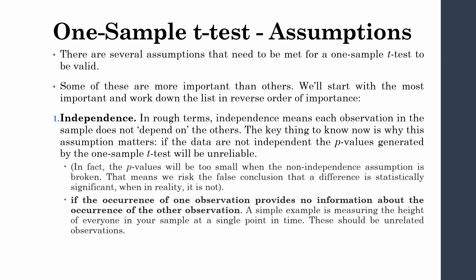If the occurrence of one observation provides no information about the occurrence of another observation, then we have independence. If one observation is causing another, that is not independence. For example, when comparing per capita income of a region against a standard national value, each observation in the sample should be independent — my income should have nothing to do with any other person's income in the sample.